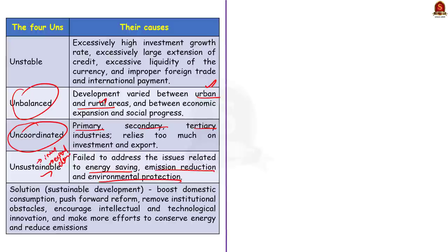The first strategy was to boost domestic consumption. The Chinese government aimed to increase domestic consumption to reduce reliance on exports, encouraging citizens to spend more on goods and services to stimulate domestic demand. The second step was reforming institutional obstacles, aimed at making the business environment more conducive for both domestic and foreign investment.